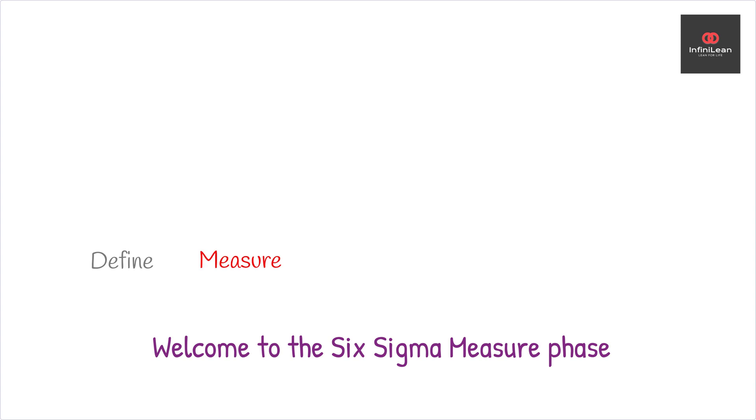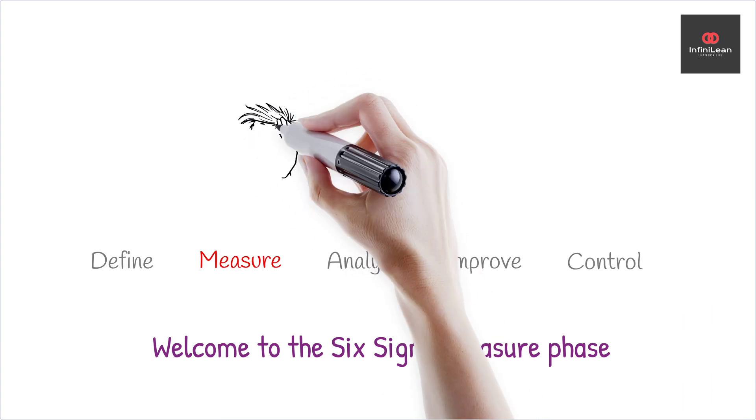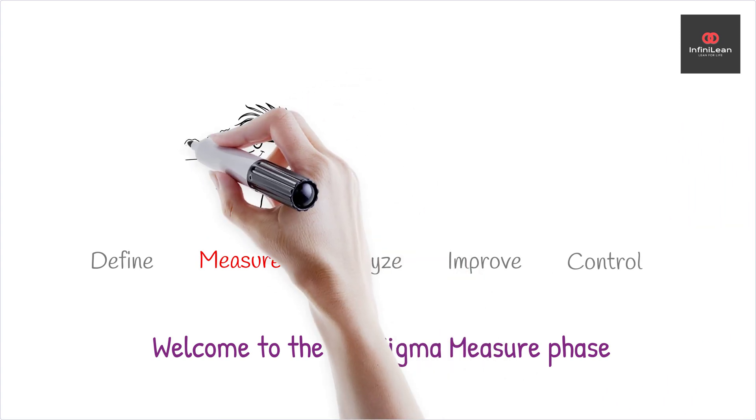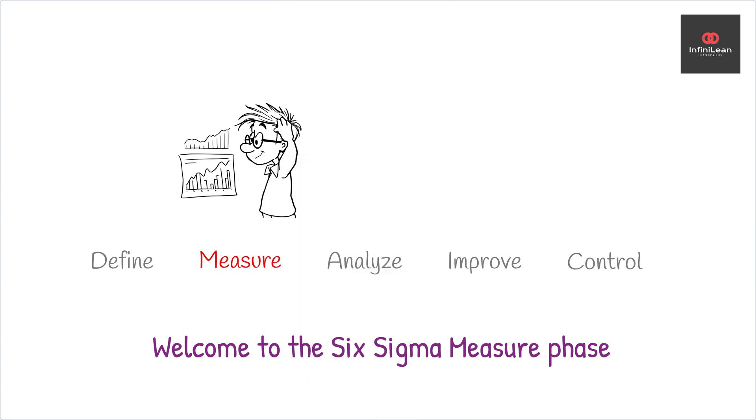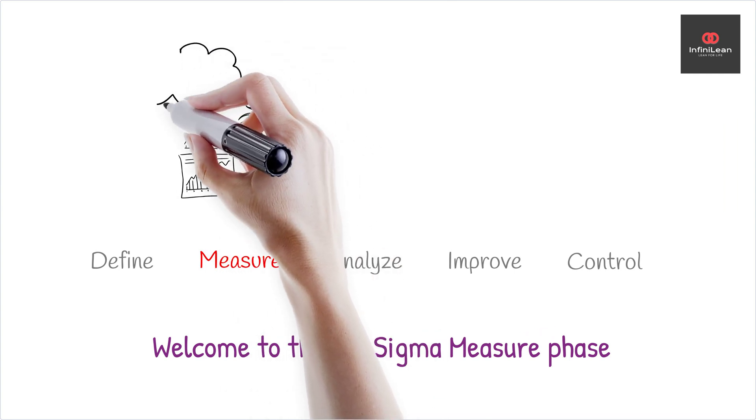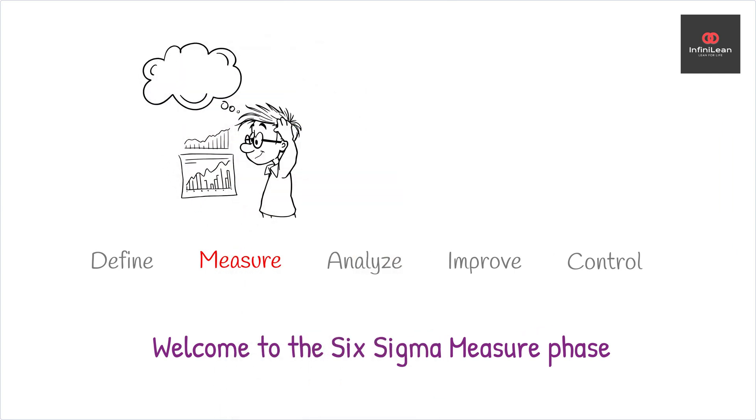The measure phase is crucial in the DMAIC methodology, which stands for define, measure, analyze, improve, and control. In the measure phase, we aim to collect reliable data to understand a process's performance and pinpoint areas for improvement. But what exactly does this entail? Let's explore.